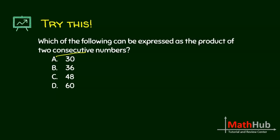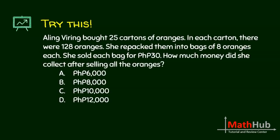Which of the following can be expressed as the product of two consecutive numbers? The answer is 30, because 30 equals 6 times 5, and 5 and 6 are consecutive — they're next to each other. That is letter A. There is no need to compute the others.